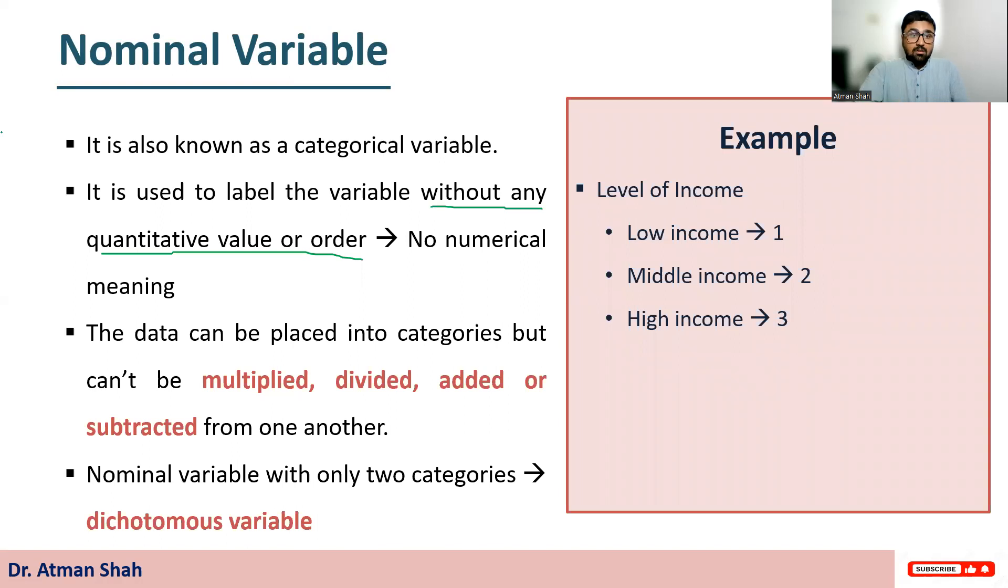A nominal variable with only two categories is known as dichotomous variable. So suppose we have gender and in gender, we have only two categories. 1 is assigned to male and 2 is assigned to female. Then gender is our dichotomous variable.